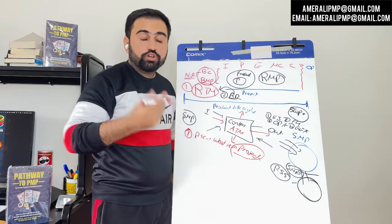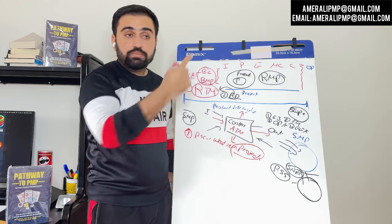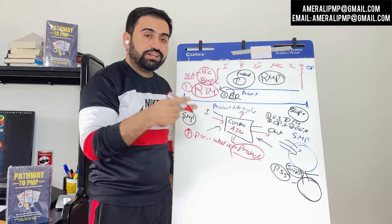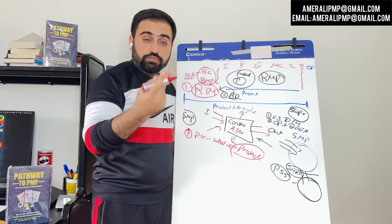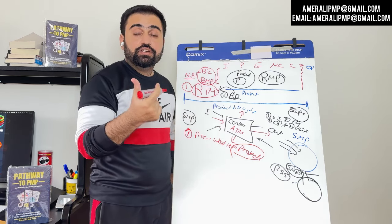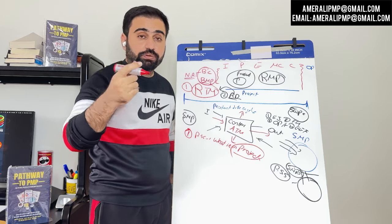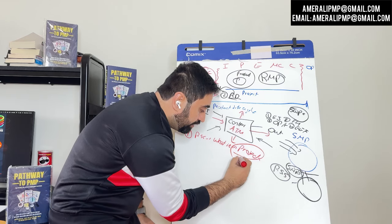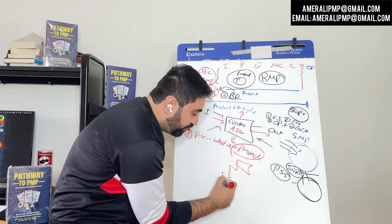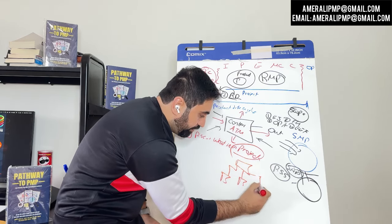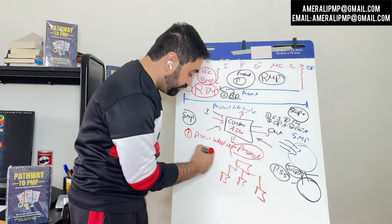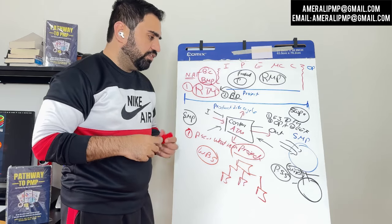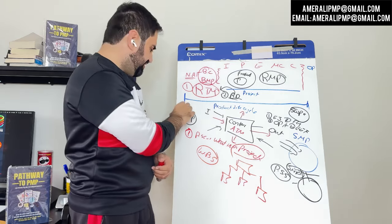Lee Lambardi, the founder of PMI — I'll put the interview here — said two things a project manager should know: one is the project scope statement, and the second is the Work Breakdown Structure, or WBS. So let's say our project is building a river. We take the project and divide it into small manageable parts — this is called the WBS, Work Breakdown Structure.